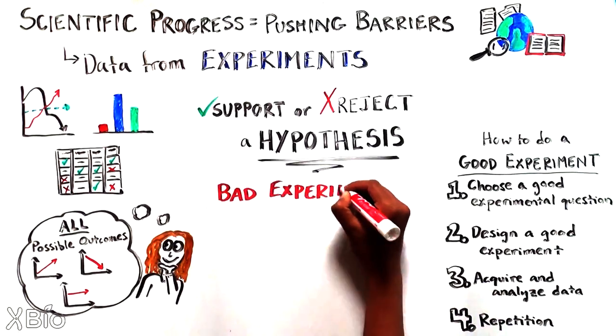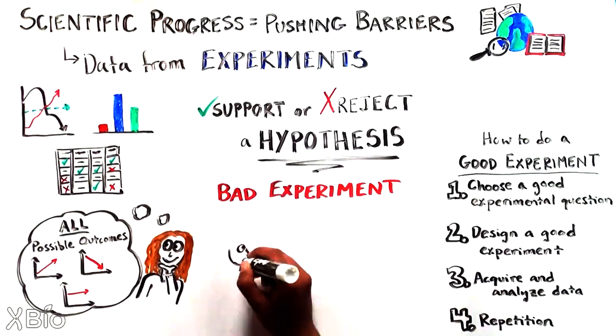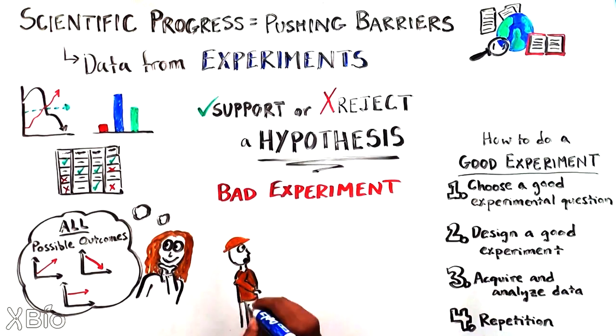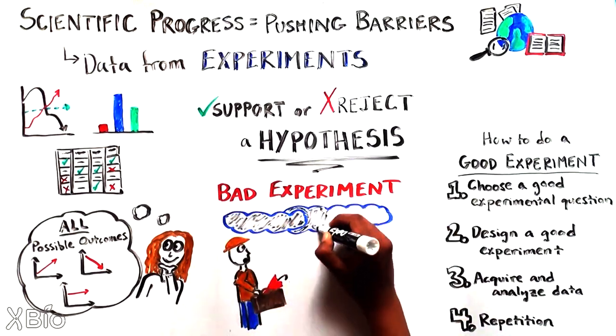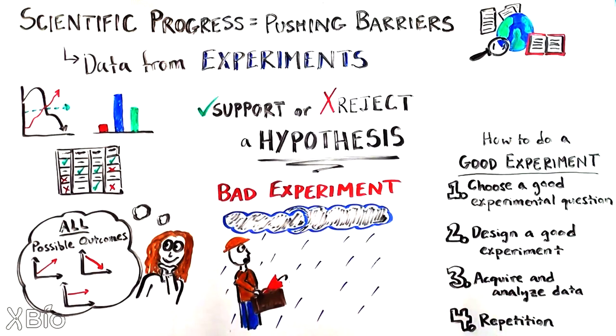If we design bad experiments, we mistakenly might end up thinking that just because we are observing two things together, like one, you carry an umbrella in your bag, and two, it starts raining on your walk, that one of those things is causing the other. You are causing it to rain on your walk by carrying an umbrella in your bag.